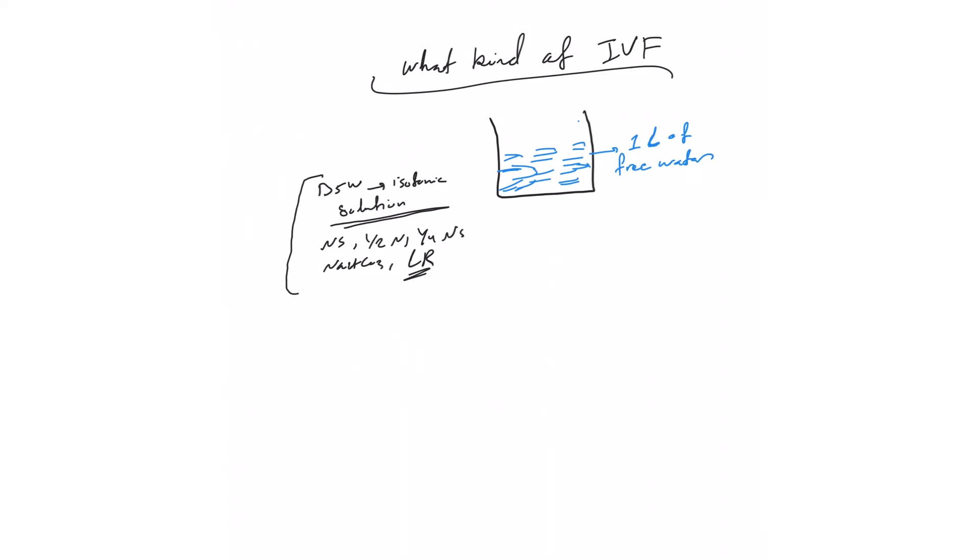But remember, outside the body D5W is an isotonic solution, so you can mix your solutions. You can say I want NS plus D5W - that will give you 300 plus 270, which is 578 osmolarity. This is hypertonic solution outside the body, but in the body this D5W becomes like free water and the osmolarity will become isotonic.